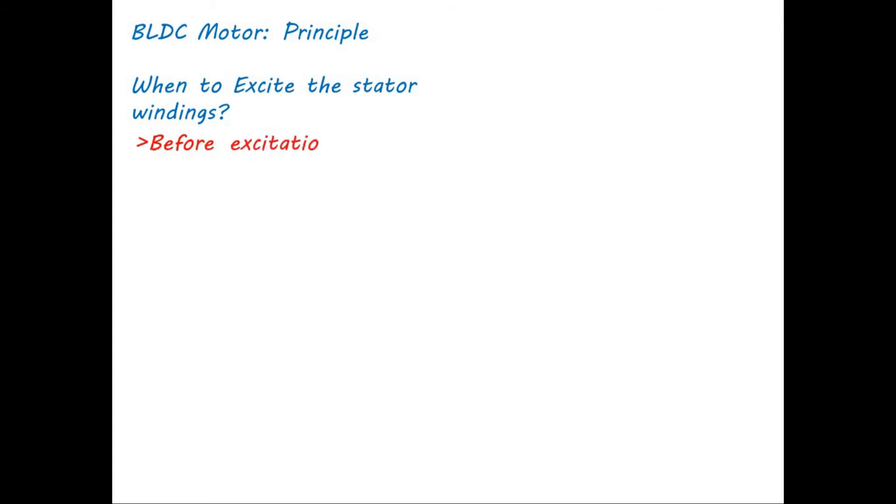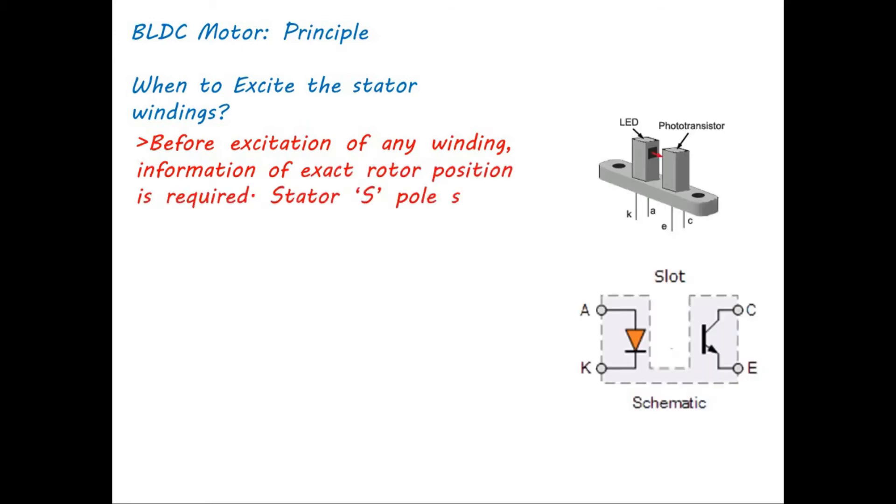When to excite the stator winding: Before excitation of any winding, information of exact rotor position is required. For that purpose, encoder or optical sensors are used. In our case, light source with phototransistors are used to get the position of rotor.